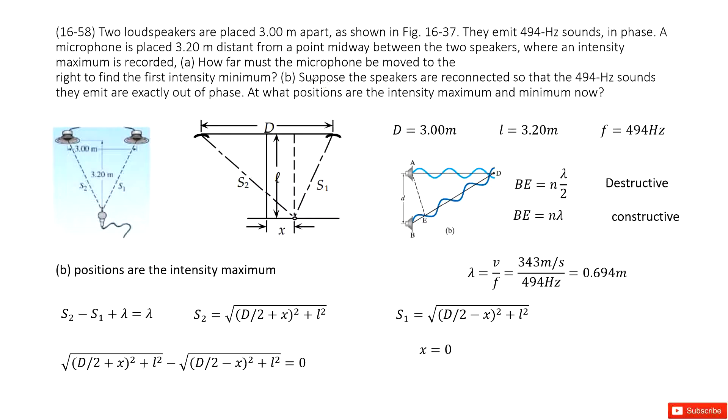The second part asks you, suppose the speakers are reconnected so that the 494 sounds are exactly out of phase. Question. What means out of phase? Out of phase means the wavelength is lambda. The wavelength, it moves wavelength. It leads or lags lambda.